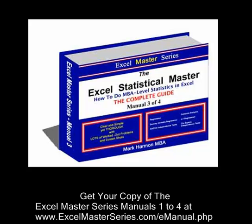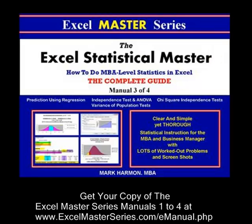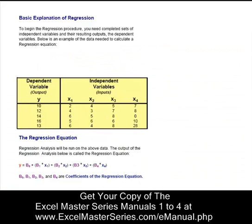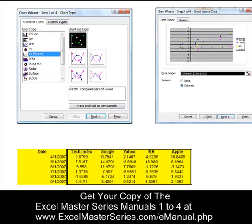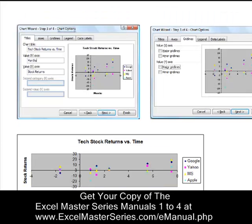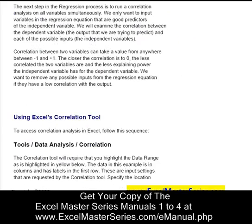Here's Manual 3. It covers regression using dummy variables, chi-squared independence tests, the variance of population tests, and ANOVA. Let's take a look at the regression section. Everything is presented in step-by-step frameworks — all regressions are solved with a four-step process. I walk you through it slowly and carefully with screenshots so you'll fully understand how to do it and how to interpret it.